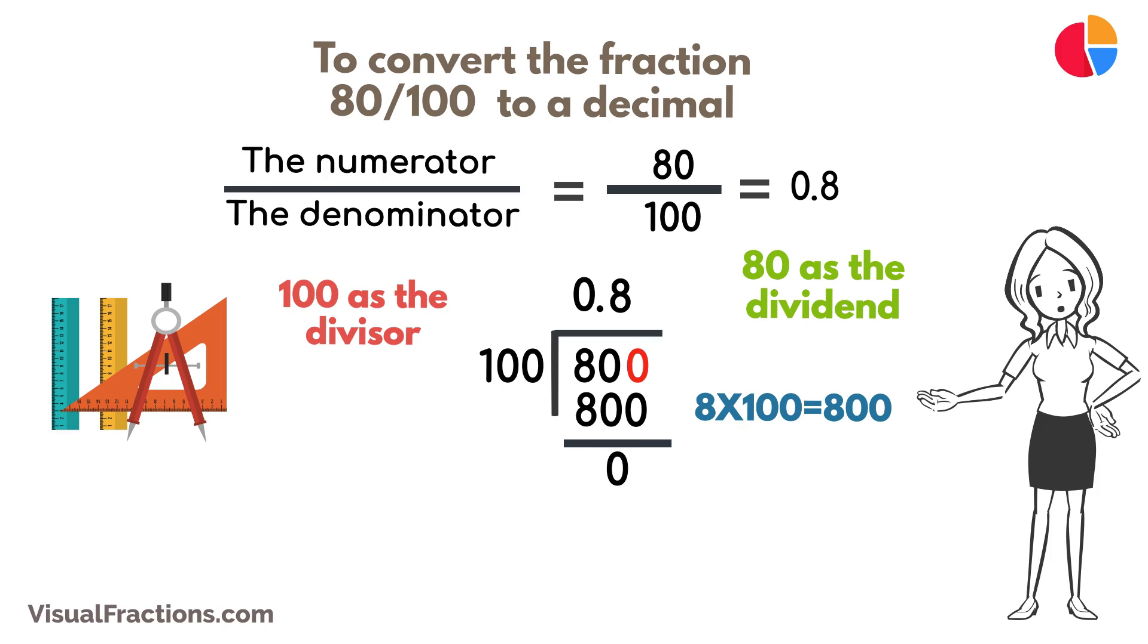So, there we have it. The fraction 80 one hundredths converted to a decimal is 0.8. This conversion process demonstrates a straightforward method to understand and represent fractions in decimal form.